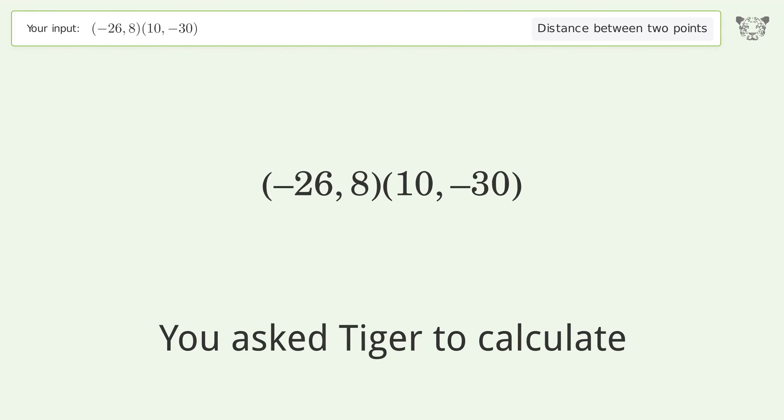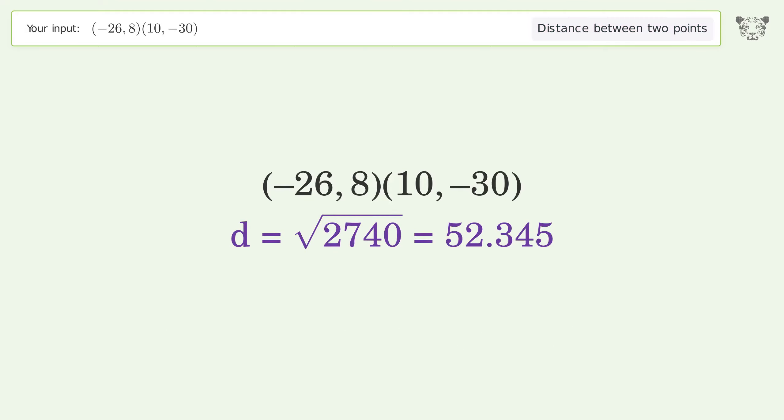You asked Tiger to calculate the distance between two points. The distance between the two points is the square root of 2740 or 52.345.